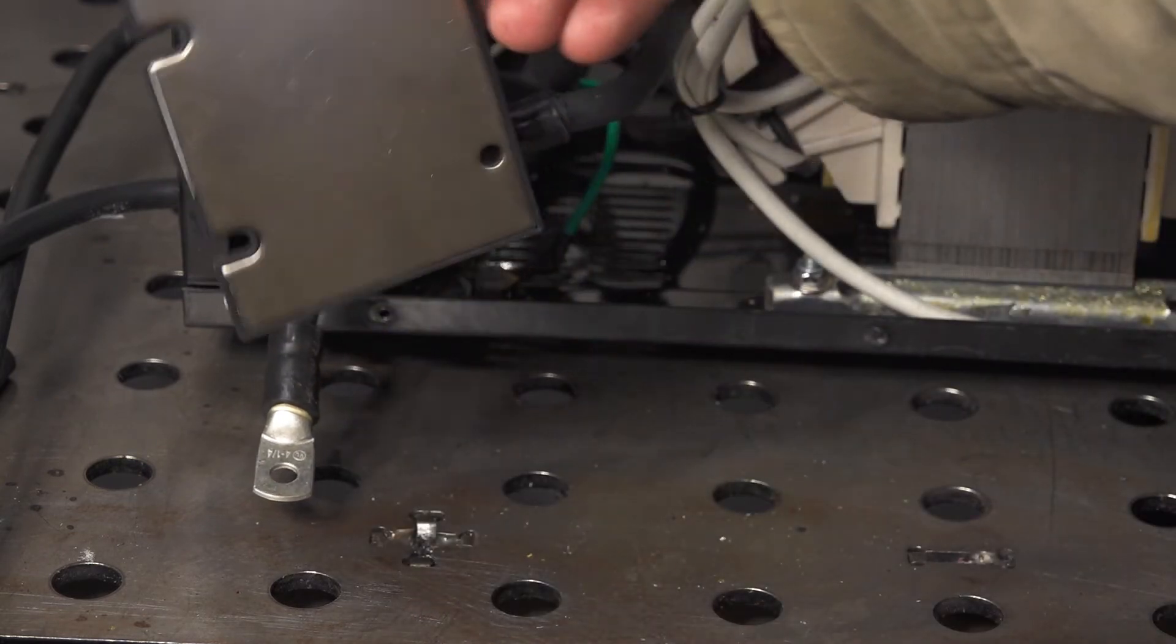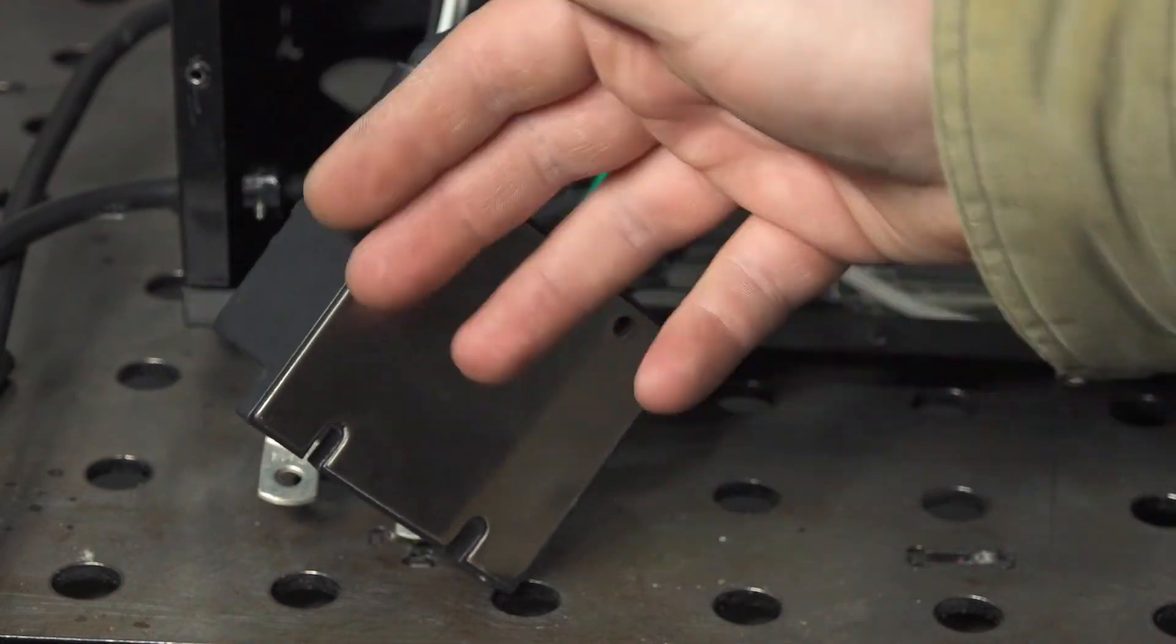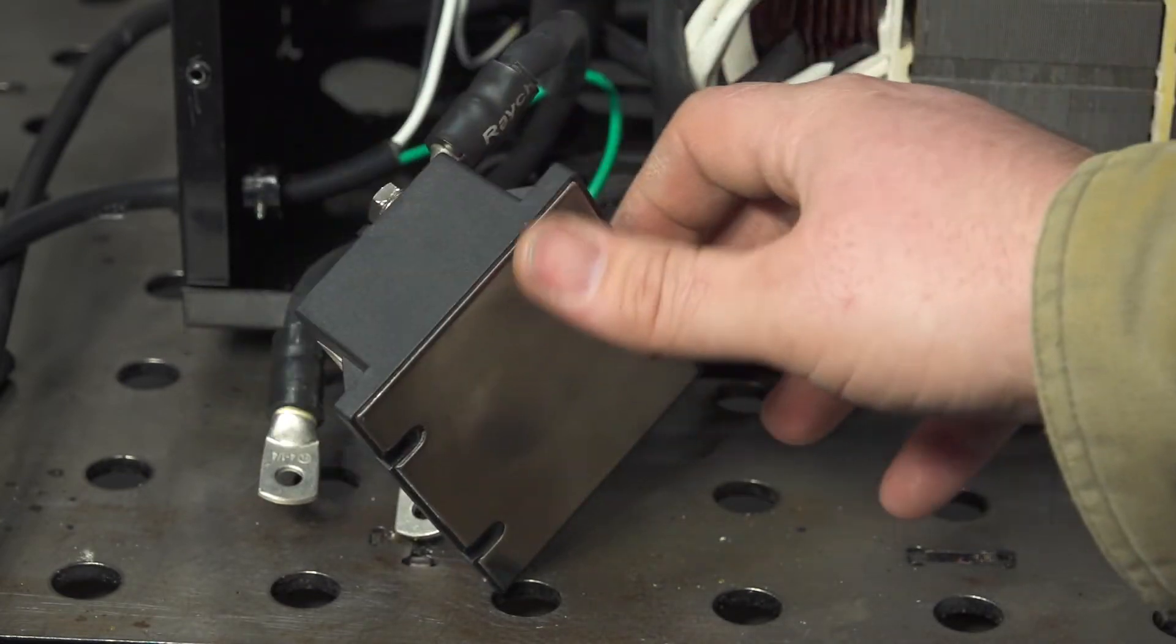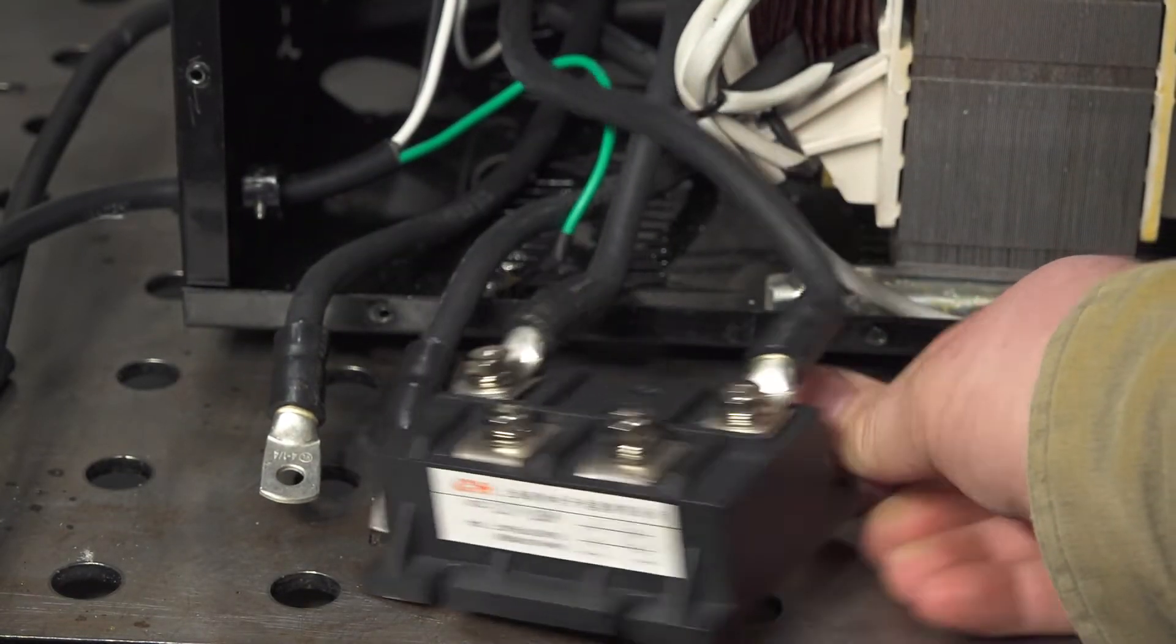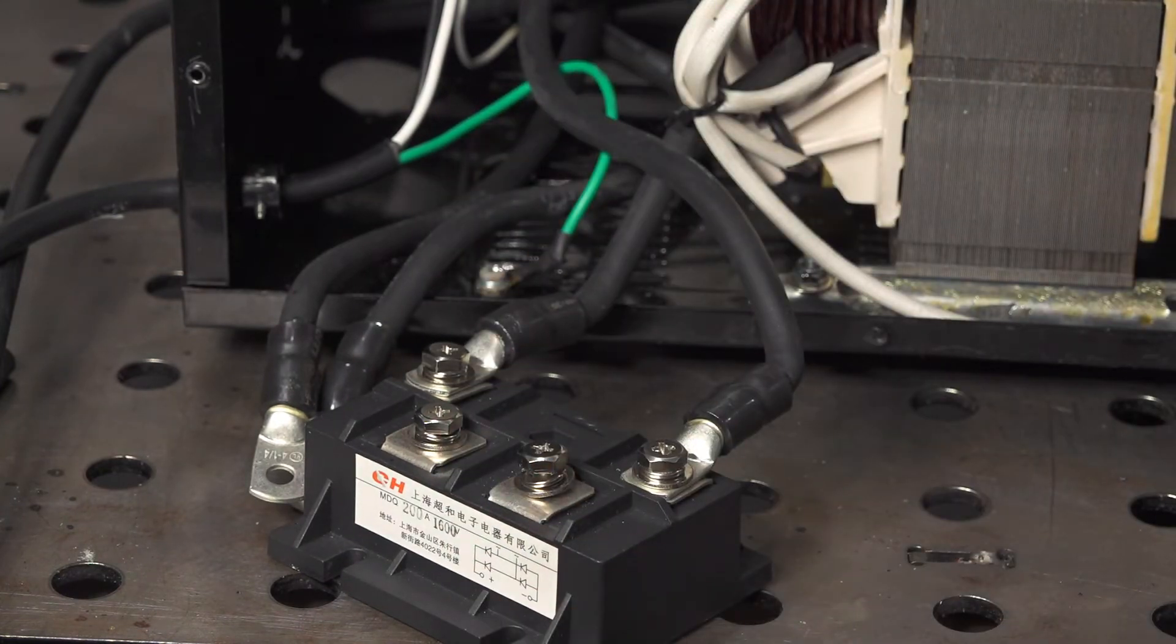Now these rectifiers do have a metal plate on the back and that is essentially a heat sink. This will get hot and that's how the diodes inside will actually dissipate heat is through this plate. Now depending on duty cycle and how close you're running to the diode's capability, they may build up more or less heat.